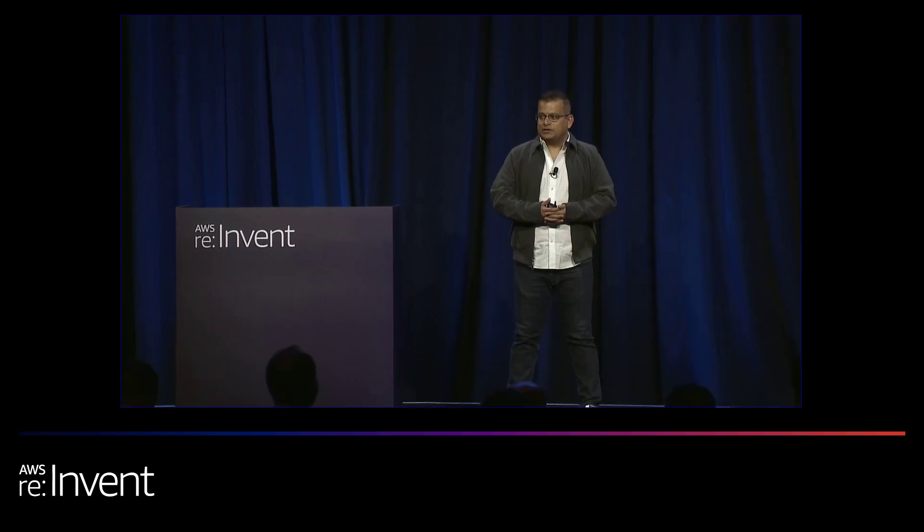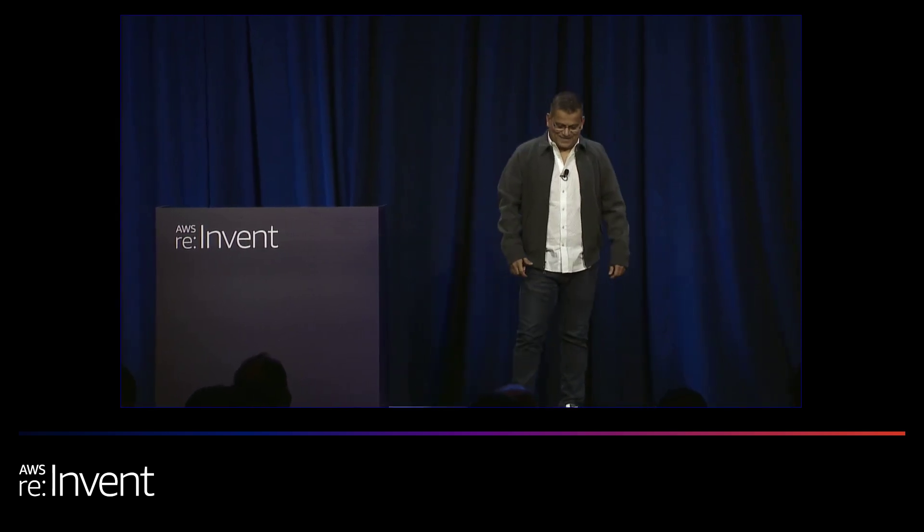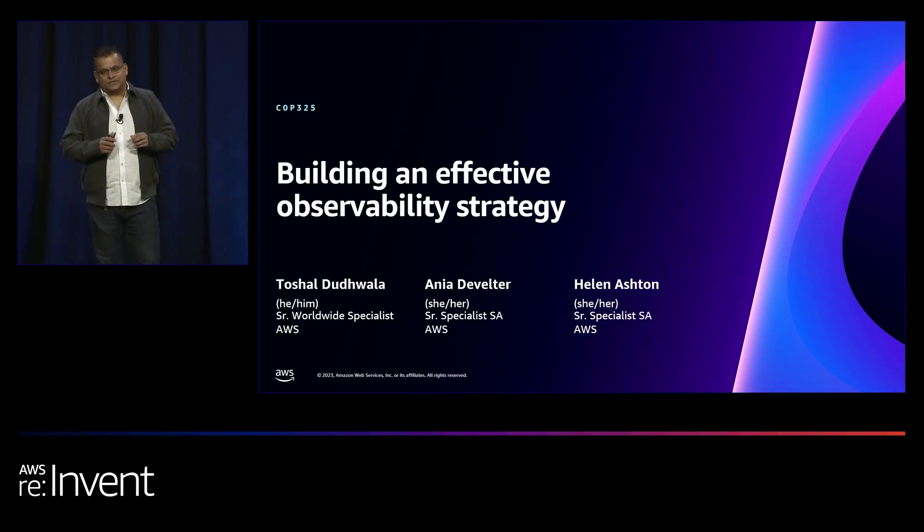Hello, good afternoon and welcome to re:Invent. Have you ever wondered if you can improve the way you do monitoring and observability so your day-to-day life becomes easier? You may have many tools but don't know how to effectively use them. Imagine a guideboard or a roadmap which effectively shows you how to monitor and observe the performance of your applications and infrastructure. My name is Toshal, and with me I have Helen and Ania from the AWS Observability team. Today we're going to show you how to effectively build an observability strategy in eight steps. Let's get started.